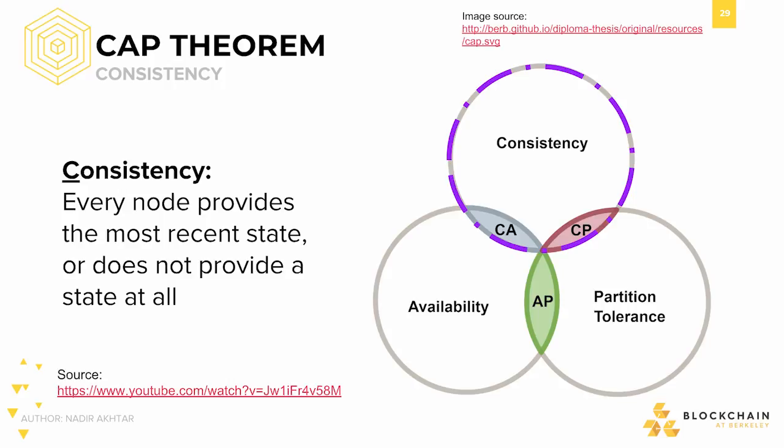The C in CAP stands for consistency. Consistency in a system is defined as every node providing the most recent state of a system. If it does not have the most recent state, it will not provide any response. This builds off the idea of safety because it refers to something that will never happen. Consistency says that no two nodes will return a different state at any given time, and that no node will return an outdated state.